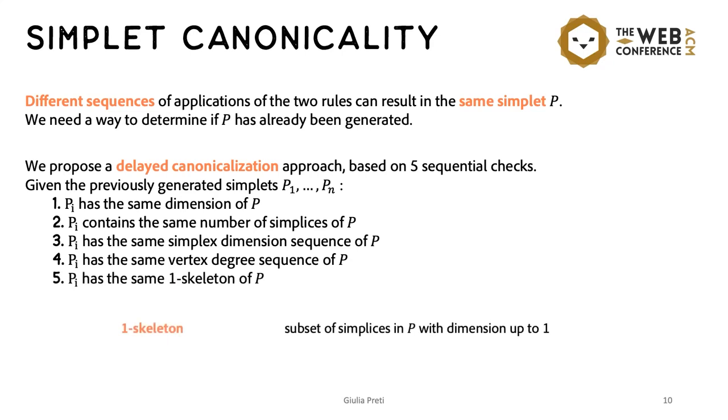And the last one compares the canonical forms of the graphs underlying the simplices, which are here called one-skeletons. And the reason behind this comparison is because finding the graph canonical form is an easier task than finding the hypergraph canonical form. And so we do this operation before the other.